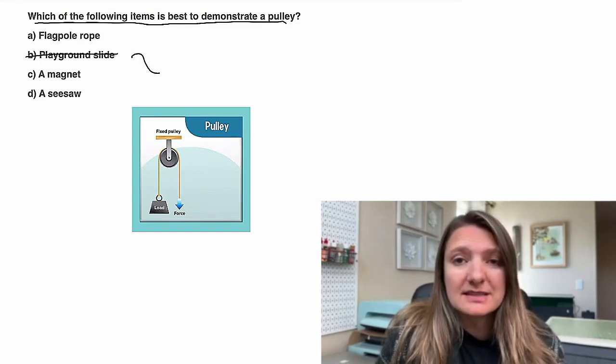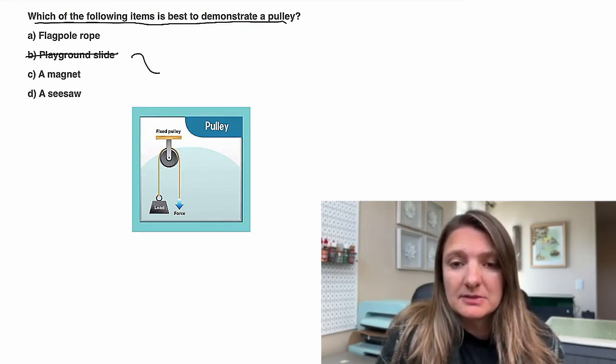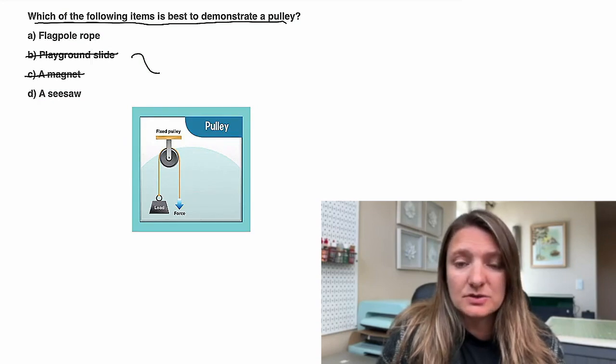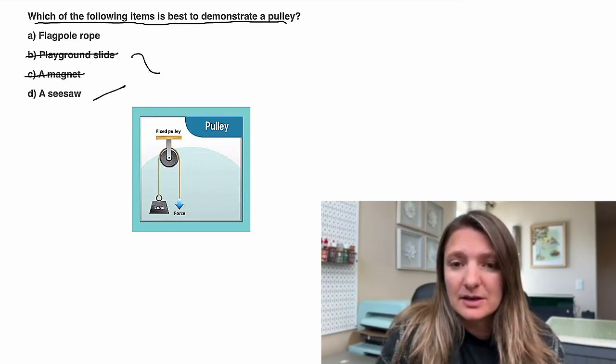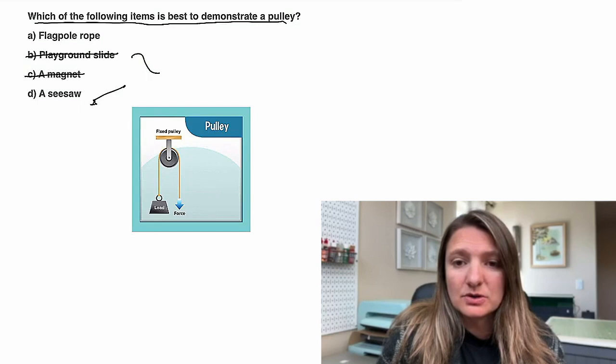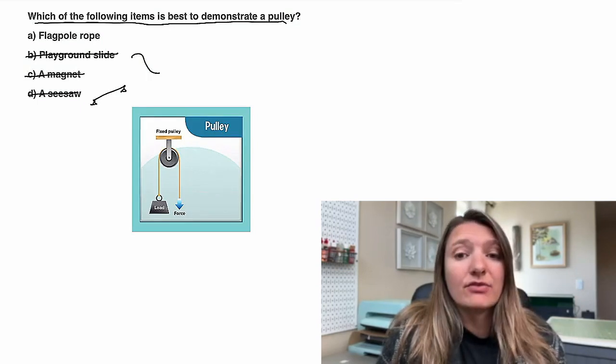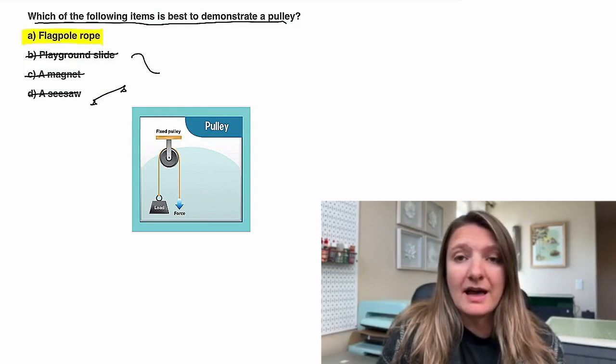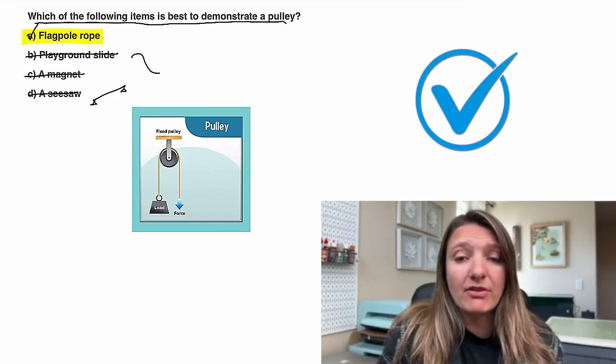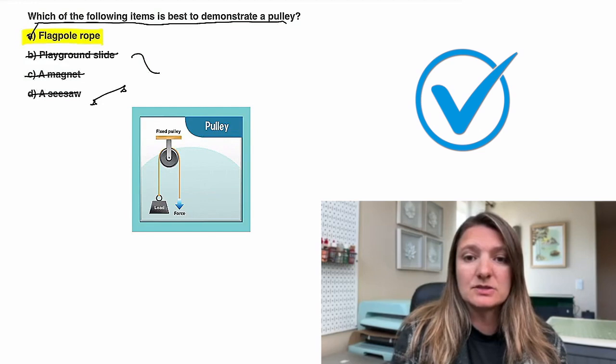If you look at the playground slide, that's just a simple slide. We can eliminate that. A magnet is where two things are pulling together. That's not a pulley. A seesaw is where you're going to have that little plank in between, so we can eliminate that. And the flagpole rope will have a pulley system in there to pull the flag up. So our answer is A.